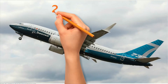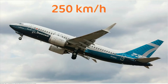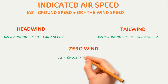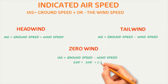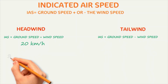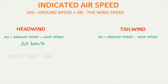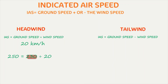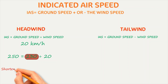The Boeing 737 has to attain nearly 250 km/h indicated airspeed before lifting off. If there is no wind, the aircraft has no assistance, so it must reach 250 km/h ground speed. With a 20 km/h headwind, the aircraft has assistance from the wind for generating lift, so it effectively needs to reach only approximately 230 km/h ground speed. Hence, with headwind, the aircraft needs a shorter runway length for takeoff.